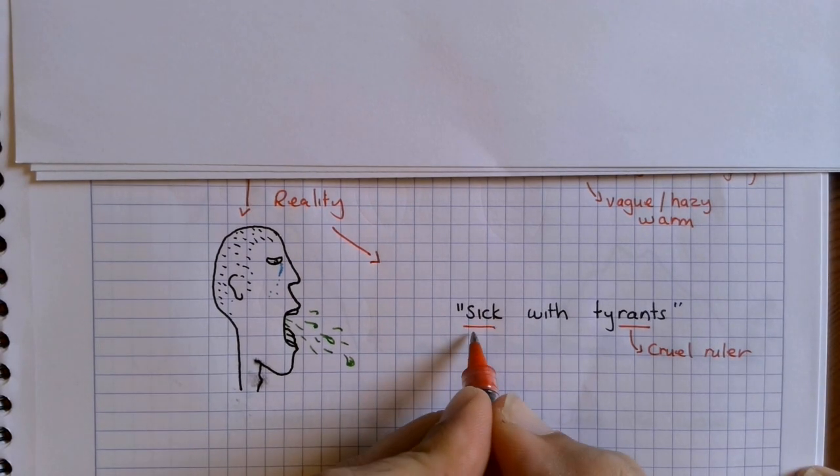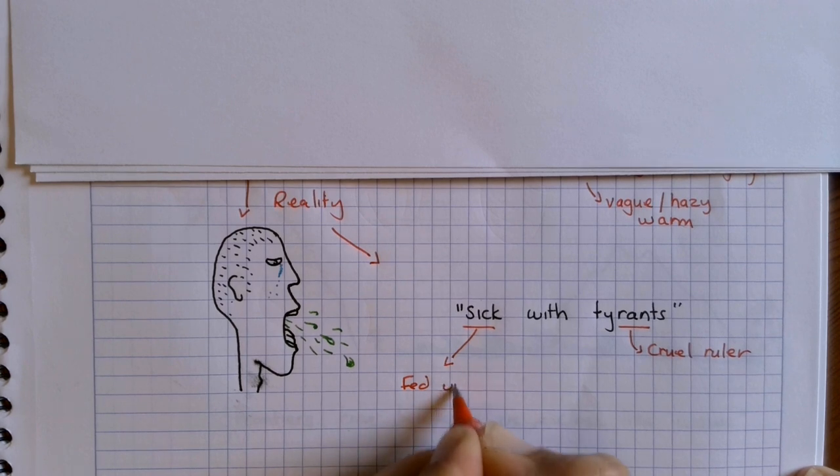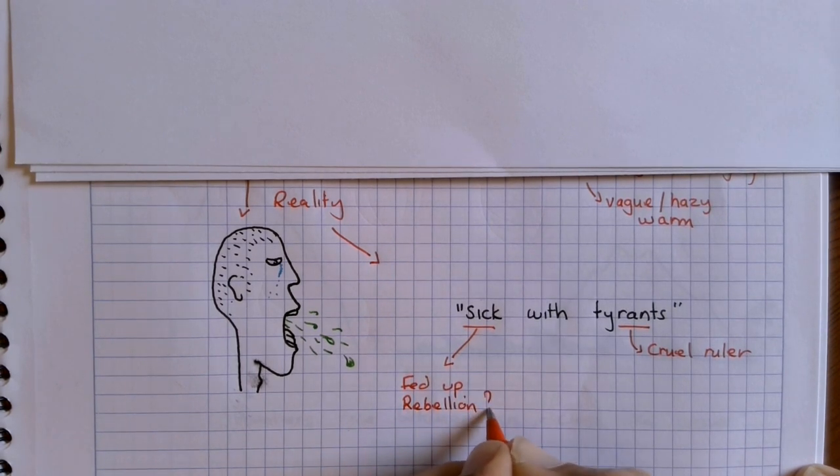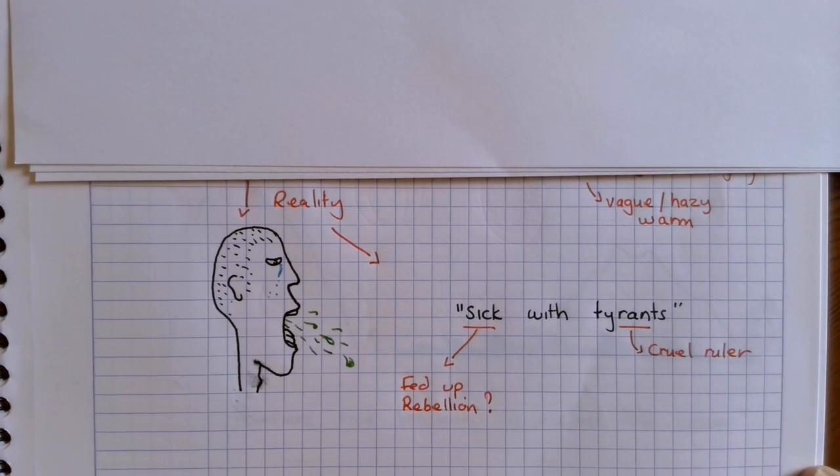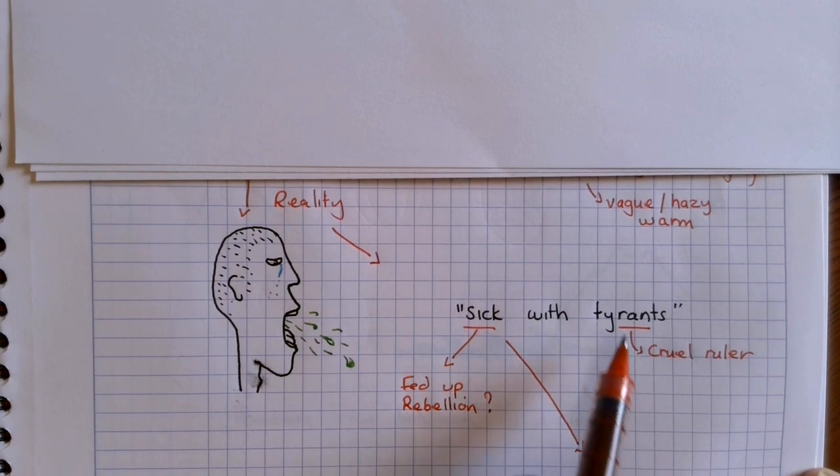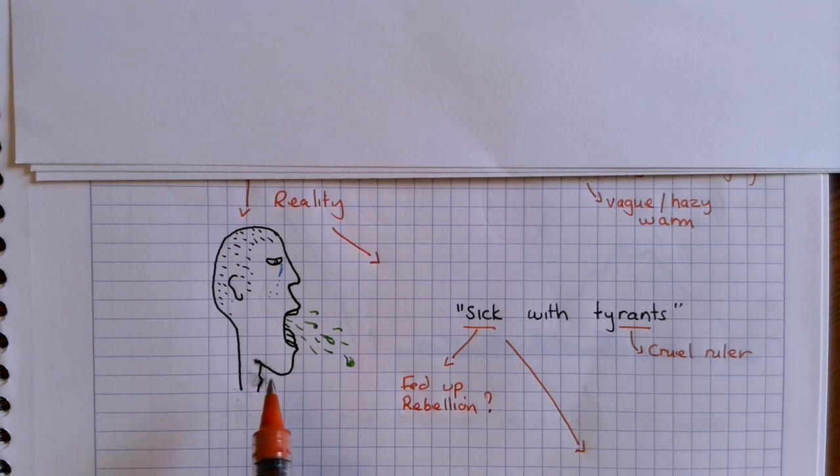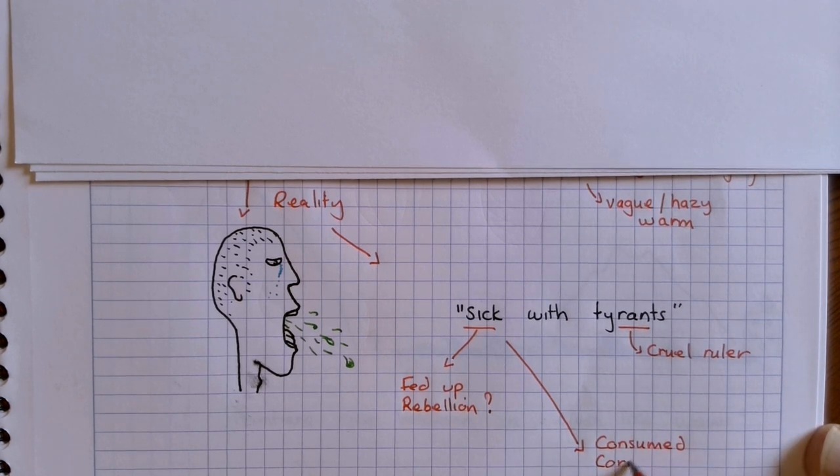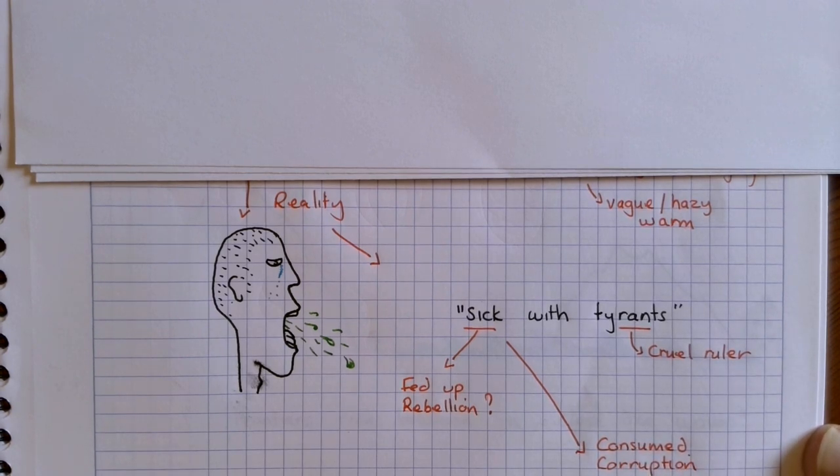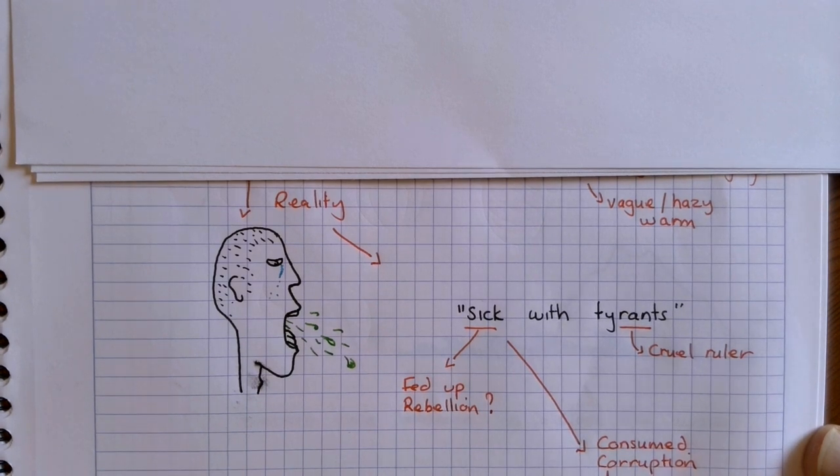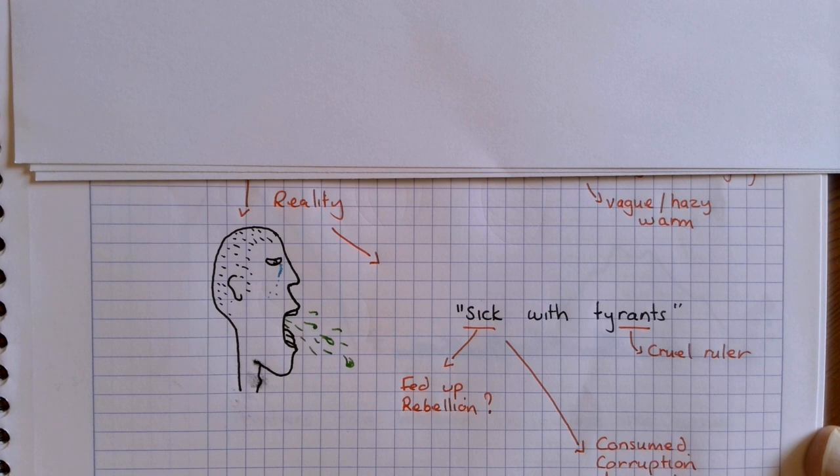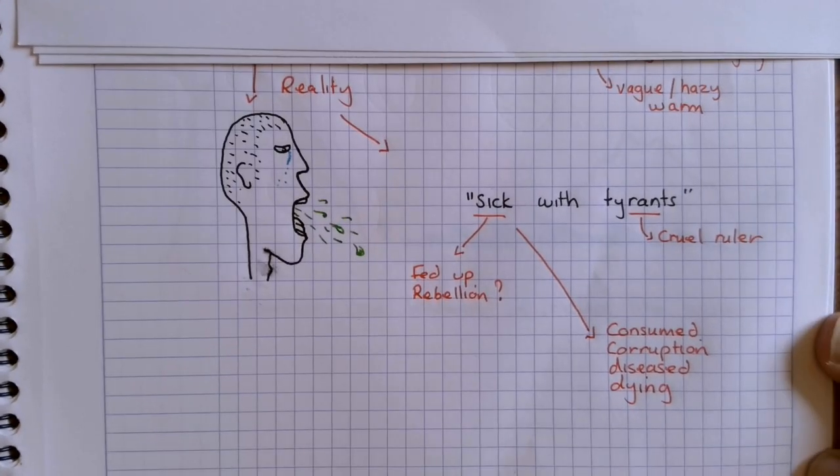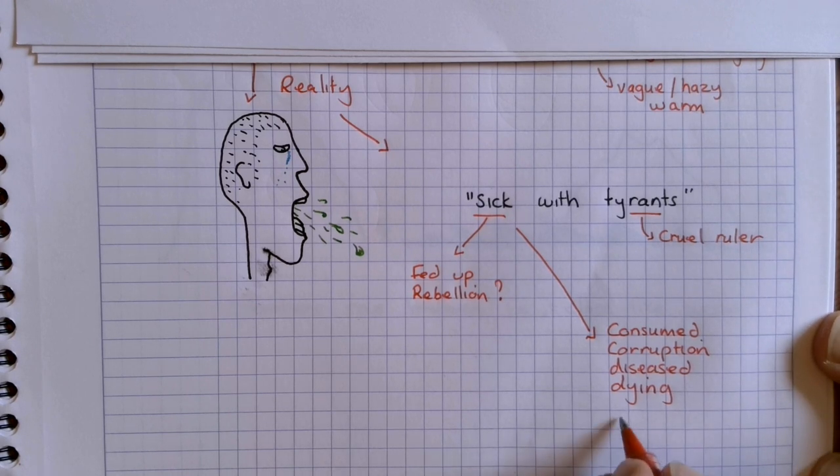And if you're sick with something, you can be fed up. So the city might be fed up with them. They've had enough of the tyrants. They want to overthrow them. So it could be this idea of rebellion. They're sick with their tyrants. They want to get rid of them. But also, like you see in the picture, those tyrants might be making the people sick and ill and unhappy. So we have this image of a city consumed with corruption. The corruption of tyrants. It almost seems diseased. It's become unhealthy. The people are unhappy. They're corrupt. And maybe even they're all dying. The tyranny is killing them. The tyranny is taking away their freedom and their culture.